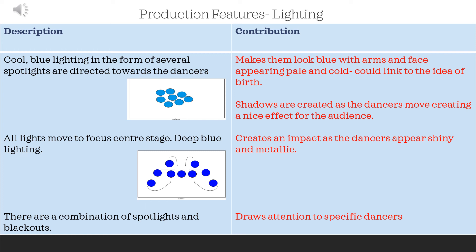For lighting: the piece starts with cool blue lighting in the form of several spotlights directed towards the dancers, making them appear blue with arms and face looking pale and cold — which could link to the idea of birth. Shadows are created as the dancers move, creating a nice effect for the audience. Then all the lighting moves to focus centre stage with a deep blue, making dancers appear shiny and metallic. A combination of spotlights and blackouts throughout the section draws attention to specific dancers. Please think of some more lighting descriptions and contributions.